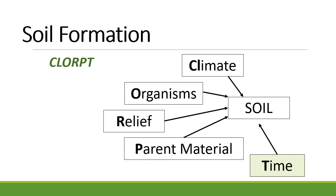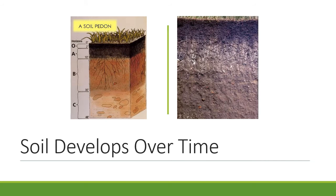The last CLORPT factor is time. You can't have soil without lots and lots of time. Once all of these factors come together, as the soil ages and sits in place, changes occur that create what we see as a prism of soil with topsoil and subsoil. In a soil pedon — one column of soil — the top may have a very organic level. The A horizon is the topsoil, the B horizon is the subsoil, and going further down is the C horizon, which is more rocky. It takes thousands of years to create that beautiful soil pedon.